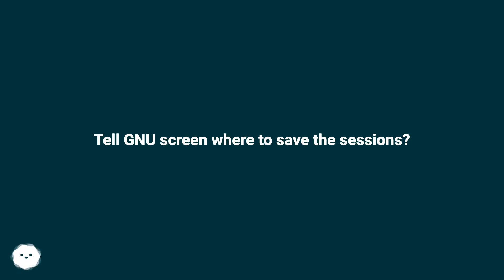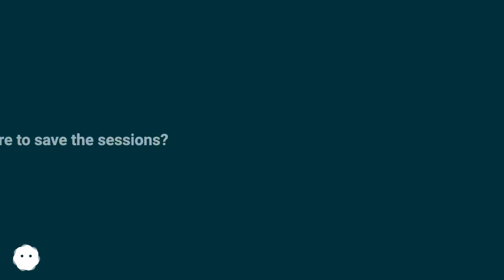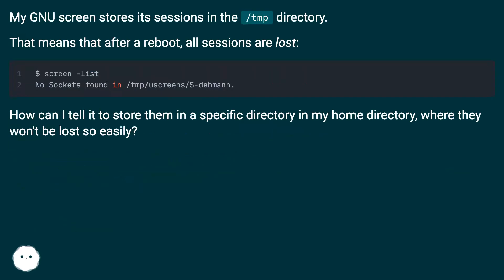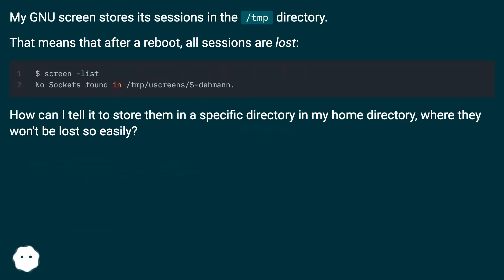How to tell GNU screen where to save sessions. By default, screen stores its sessions in the /tmp directory, which means that after a reboot all sessions are lost. How can we tell it to store them in a specific directory in the home directory, where they won't be lost so easily?